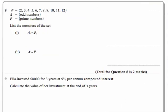This is a set question. We've got a universal set. The universal set is all the whole numbers between 2 and 12, inclusive. A is the set of odd numbers, which means all the odd numbers in here. And P is the set of prime numbers, prime numbers that are in that range.